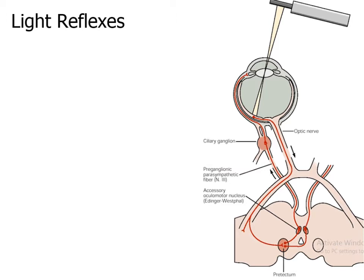The opposite Edinger-Westphal nucleus also sends parasympathetic fibers through the opposite oculomotor nerve, through the opposite ciliary ganglion, to the sphincter pupillary muscle of the opposite eye. The pupil of the opposite eye also constricts. That is the consensual light reflex.